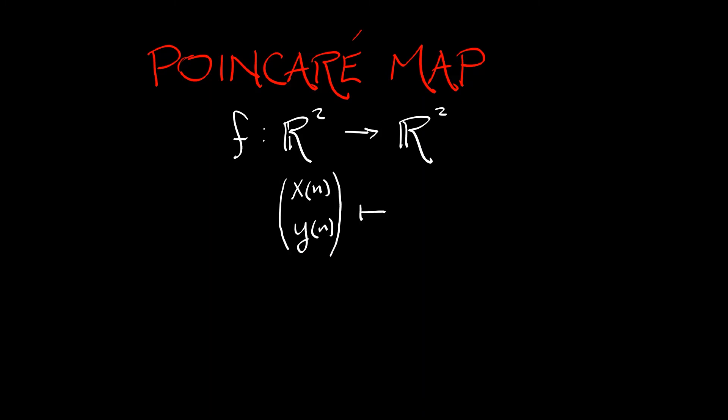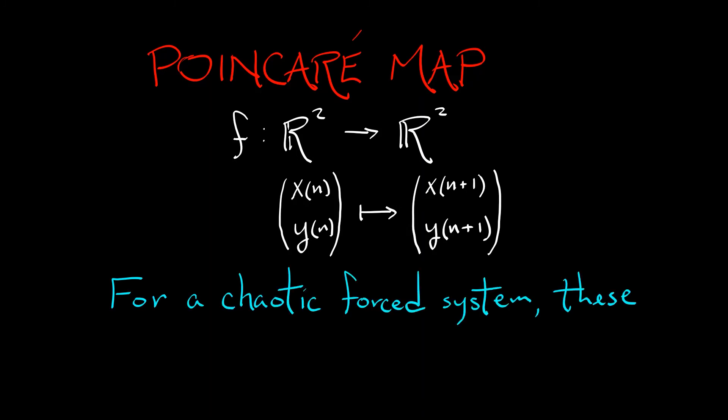So, to summarize, we have a Poincaré map, or a Poincaré first return map, that, in this case, goes from the plane to itself, that takes x and y at time n to x and y at time n plus 1. And for a chaotic forced oscillator, these maps have some really interesting patterns.